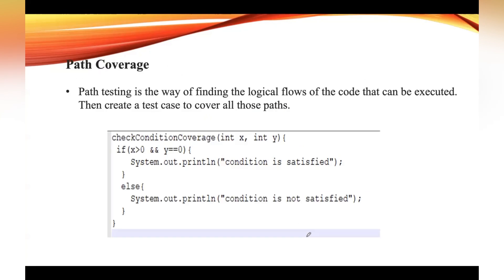The second method in white box testing is path coverage. Path testing is a way of finding the logical flows of the code that can be executed. Here we create test cases in order to cover all those paths, and this method is very useful for testing every path through the system.